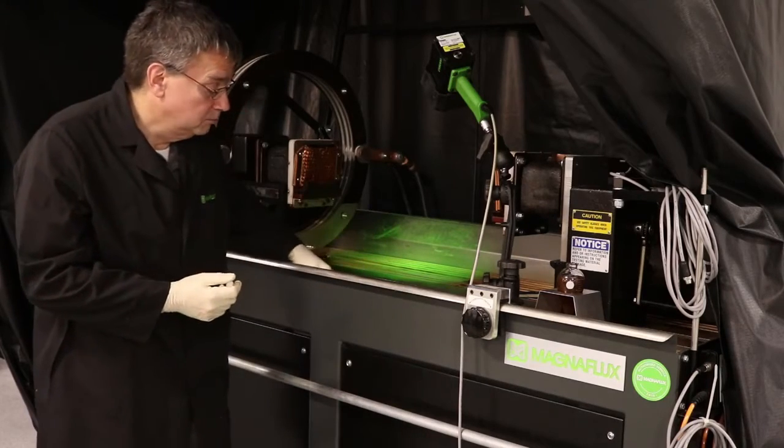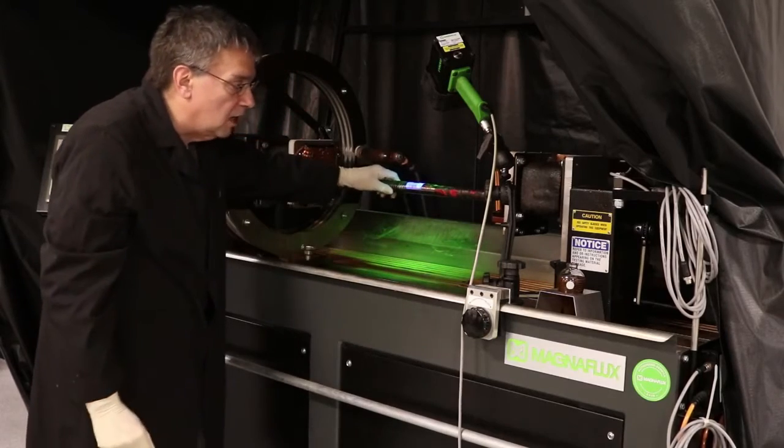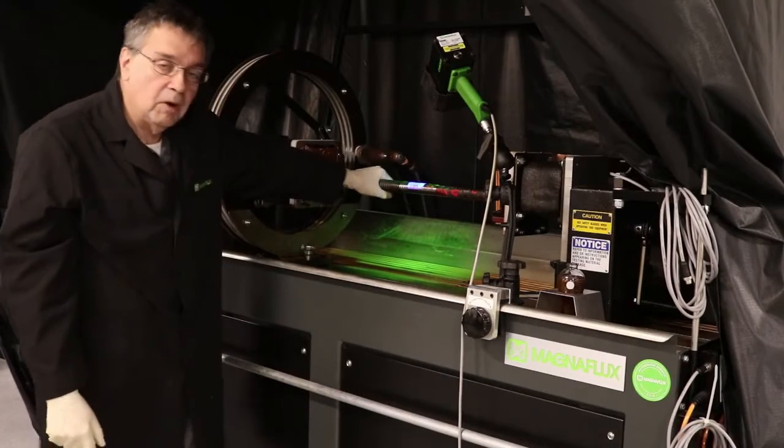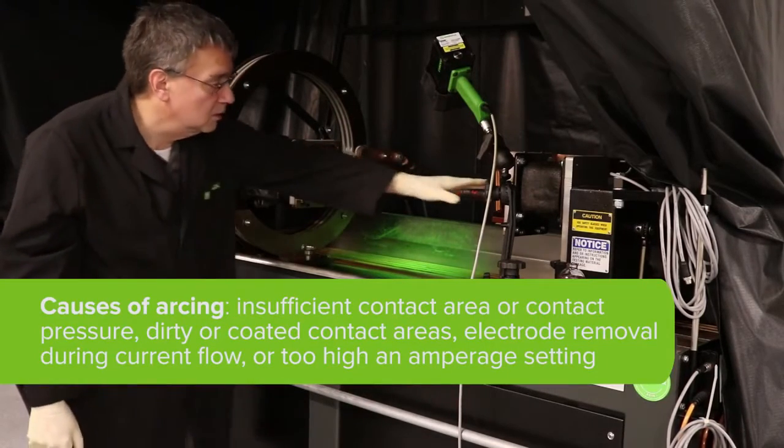Now we're ready to test the part. We'll place the part between the headstock and tailstock and then clamp the part and ensure that the part cannot be moved. This will prevent arcing between your copper pads and the part itself.